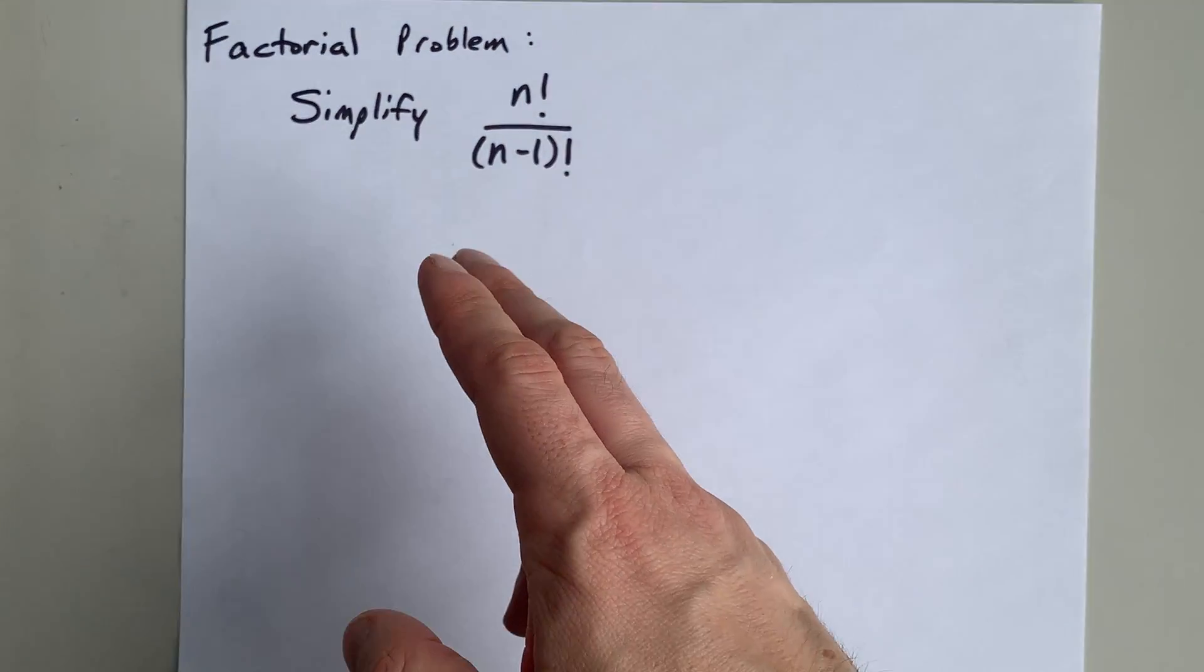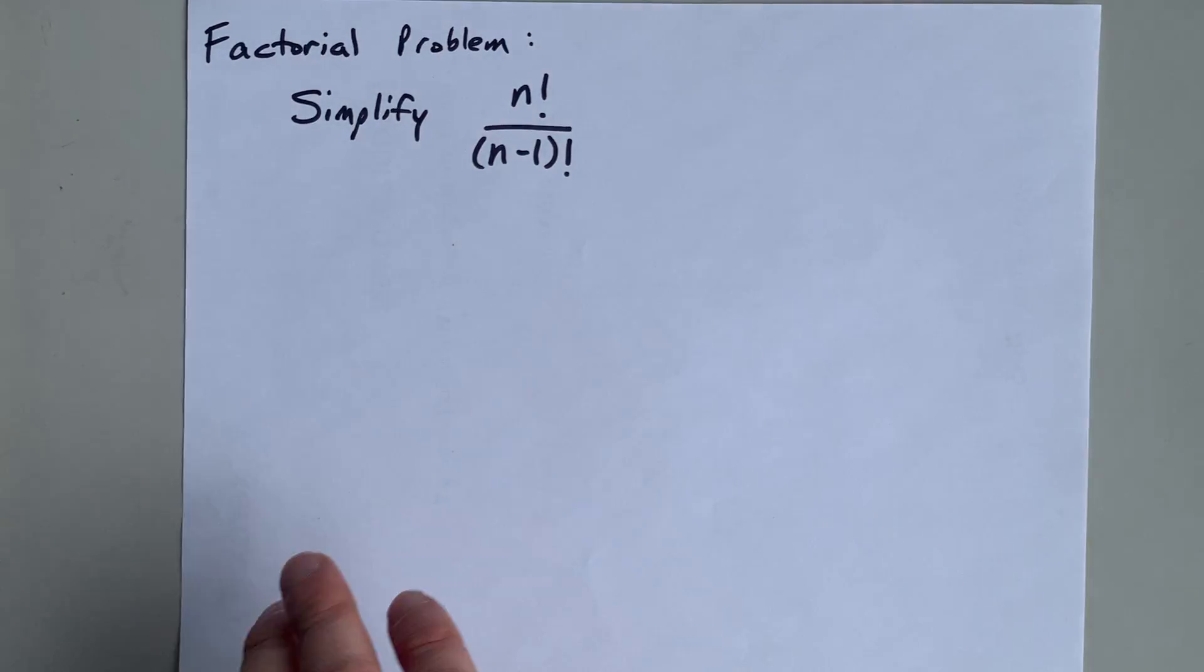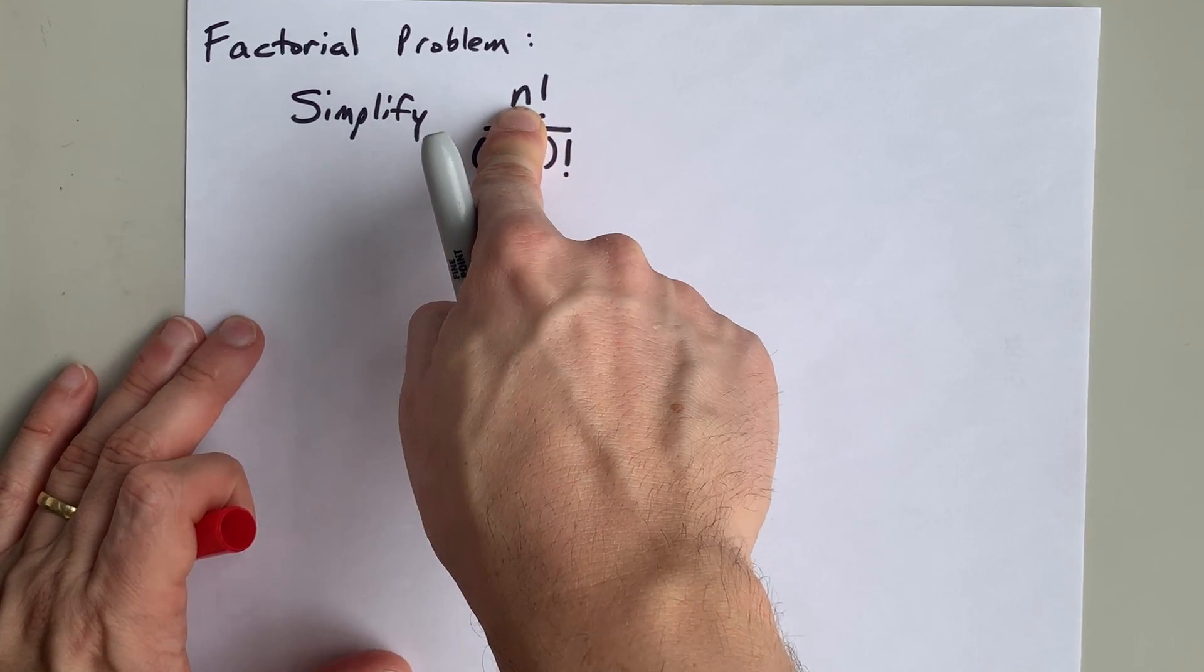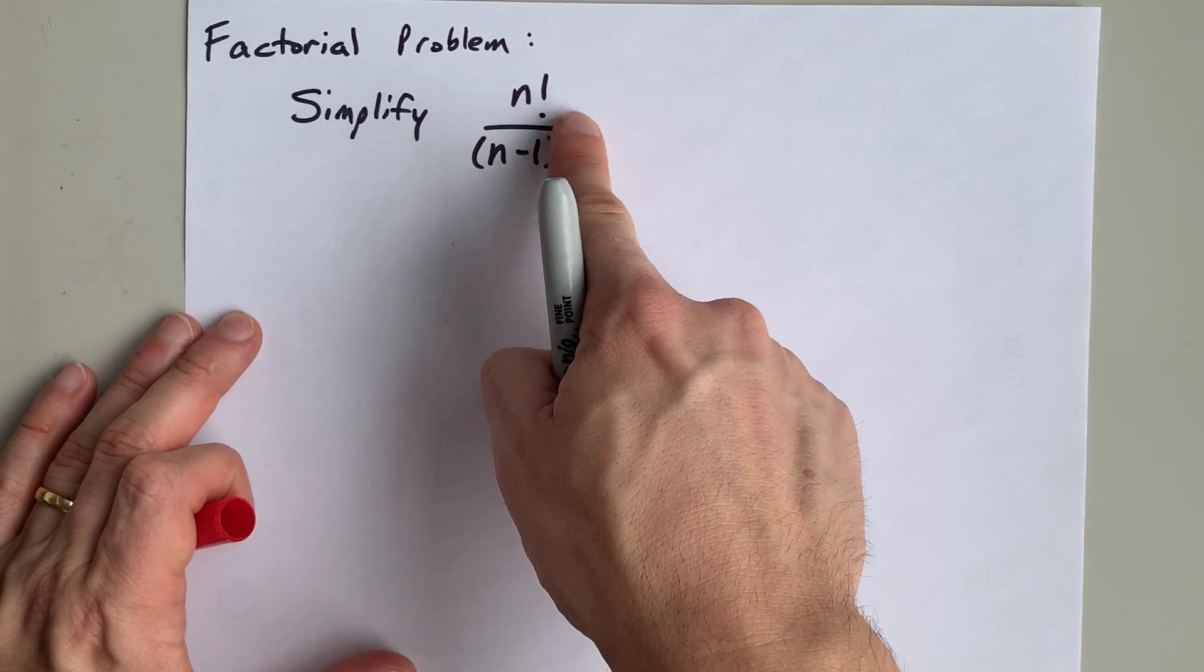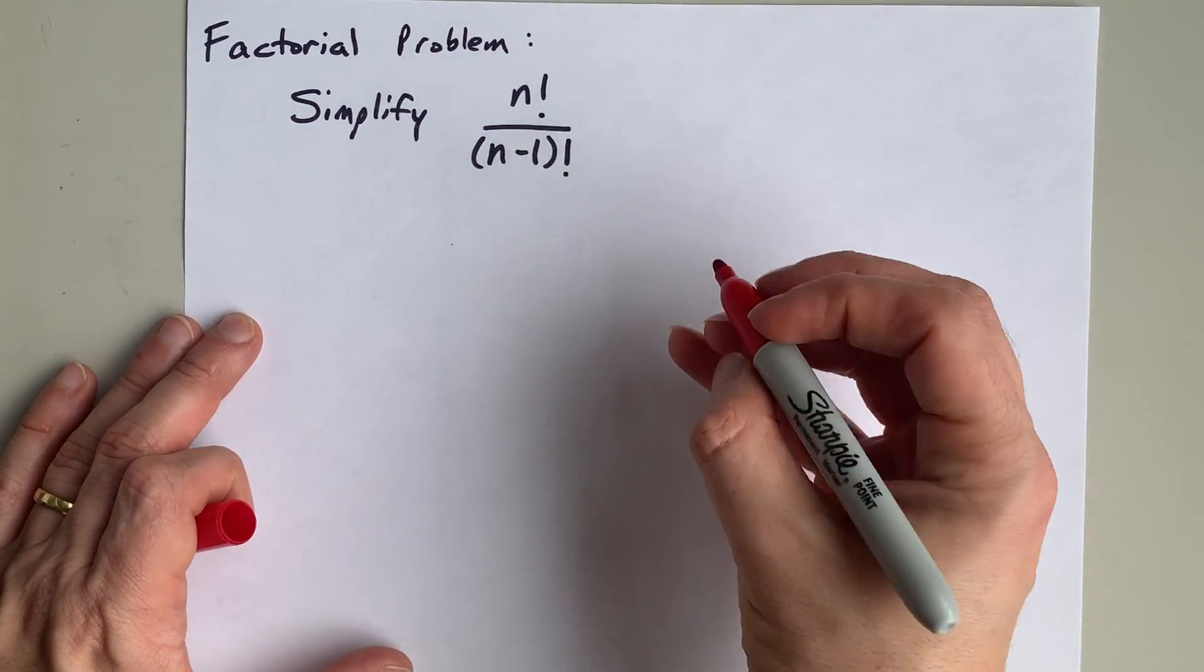We are going to simplify n factorial over n minus 1 factorial. The real key to understand here is that the factorial means you start at the number in front of it and you count all the way down to 1, multiplying those numbers in succession.